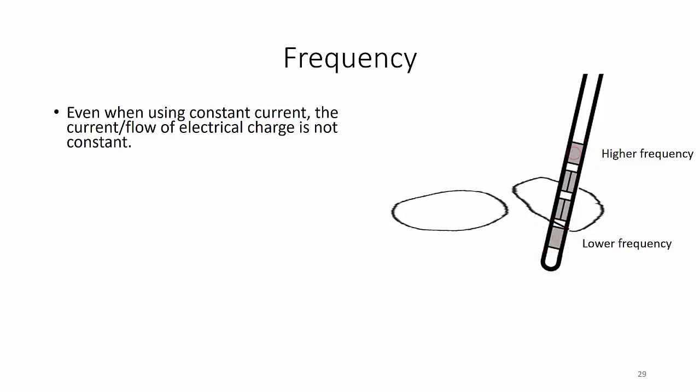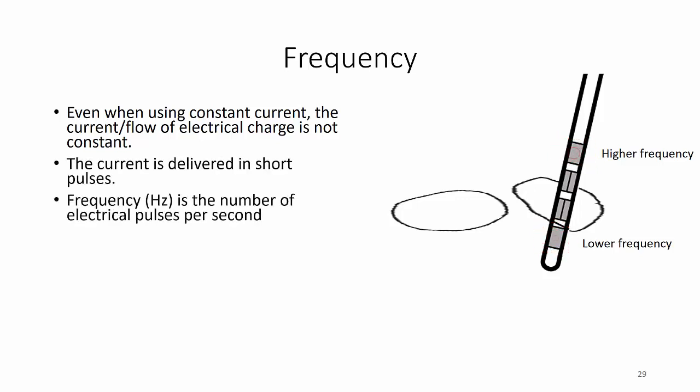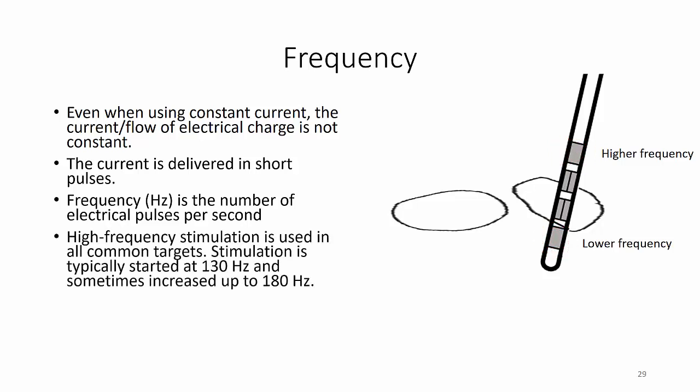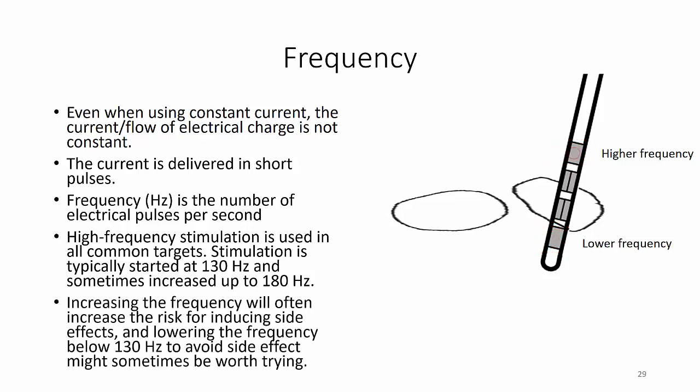Even when using constant current, the current is not delivered continuously — it is delivered in short pulses. Frequency, measured in Hertz, is the number of electrical pulses per second. High-frequency stimulation is used in all common targets, typically started at 130 Hz and sometimes increased up to 180 Hz. There are no reasons to increase the frequency above this. Increasing the frequency will often increase the risk for inducing side effects, and lowering the frequency below 130 Hz to avoid side effects might sometimes be worth trying in a few patients.